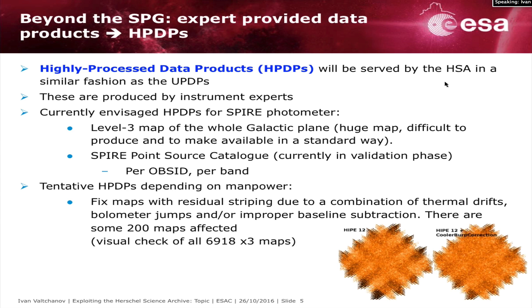Another HPDP is the Spire Point Source Catalog, which is currently in the validation phase. It will be provided on a per-observation basis and is a blind detection catalog for the three Spire bands — there will be separate catalogs for each band. There are also some tentative HPDPs, depending on manpower, to fix maps that show residual striping. This residual striping is very low contrast, of the order of 5%, and is visible in very deep observations of extragalactic fields. About 200 maps out of roughly 7,000 are affected.